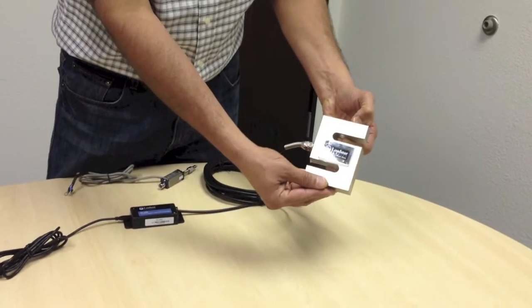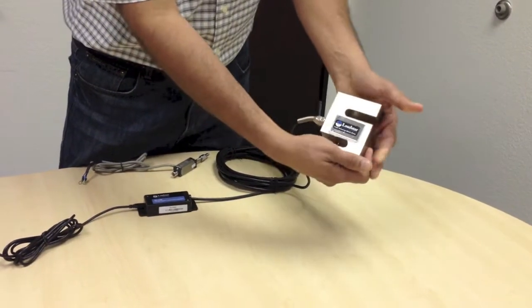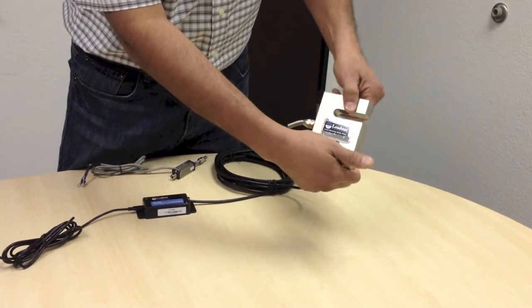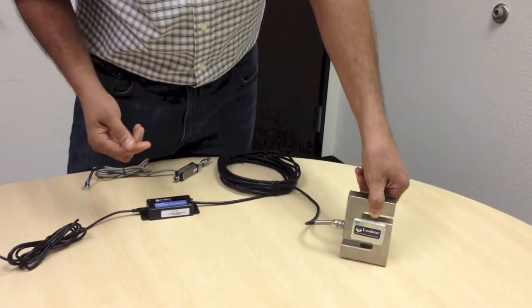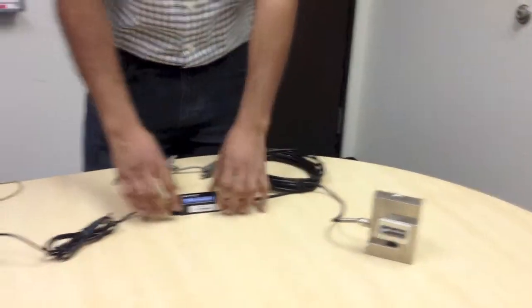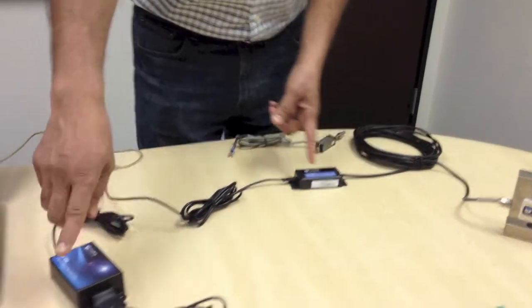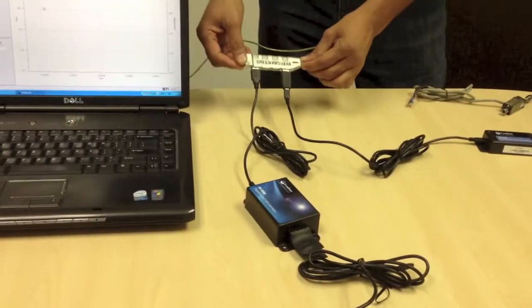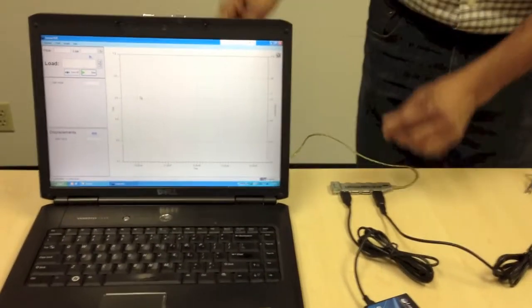This is a very nice, very accurate load cell with mounting holes on the top and bottom. You can apply compression forces or you can pull on it and apply tension forces. So it's a very versatile load cell. And it's connected to our DI-100 USB load cell interface. And so you can see both of these are going into the hub and back into the USB port of a PC.